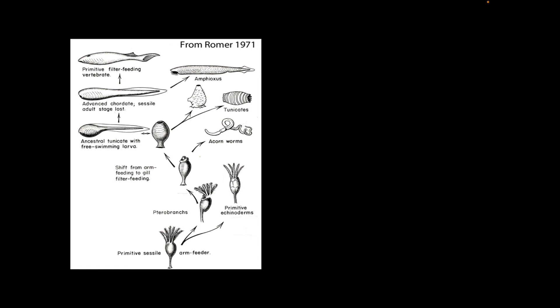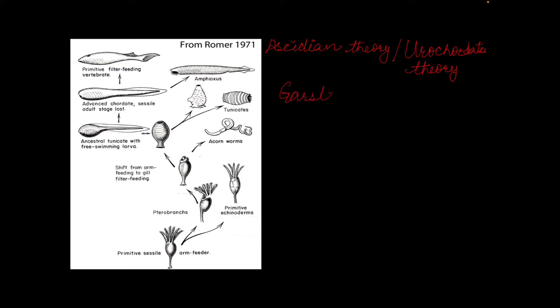Hello dear students, today we are going to discuss the origin of chordates. In the last video we discussed the Echinoderm theory, and today we will be discussing the Ascidian theory. Ascidians are the urochordates. If you don't know what urochordates are, you can watch my previous video where I have explained what urochordates and cephalochordates are.